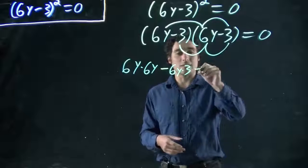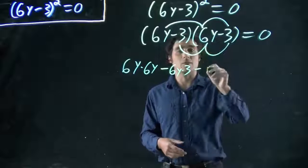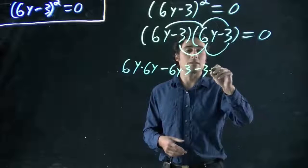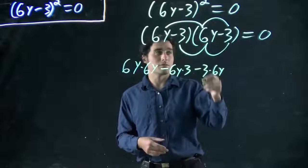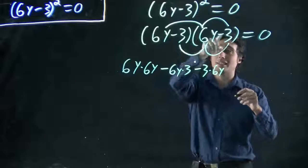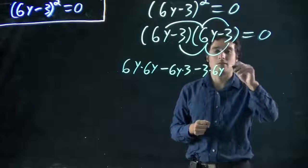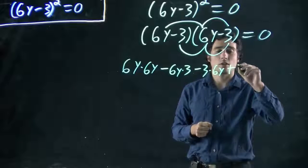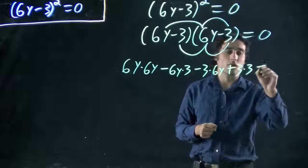What do we get? So write it all out. 6y times 6y. And then 6y times minus 3. Well, that gives minus 6y times 3, since it's minus 3. Now, minus 3 times everything in the second bracket. And you can see, this is actually going to be very similar. This is going to be the same term as we just got, because it's minus 3 times 6y. Order doesn't matter. Those should be the same. And finally, minus 3 times minus 3. Minus times a minus is a plus.